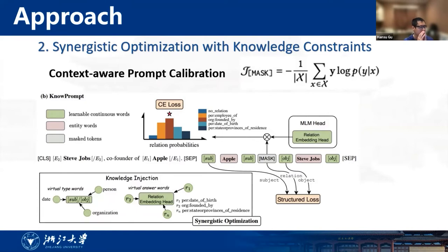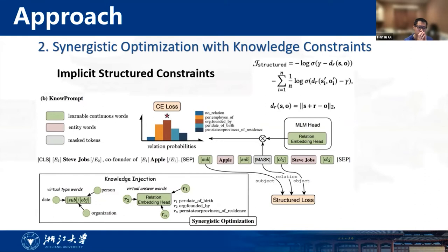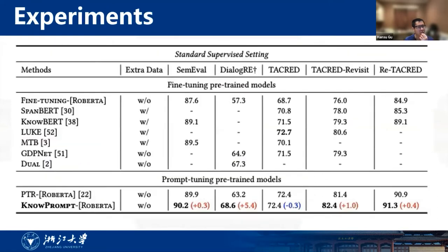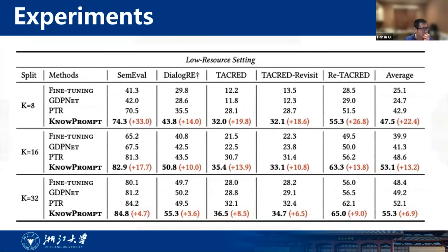To integrate structural knowledge into the prompt, we adopt additional structural constraints to optimize the prompt. We conduct extensive experiments to validate the effectiveness of our node prompt. As can be seen from the table, our approach achieved SOTA compared with several knowledge-enhanced pre-trained language models in standard supervised settings. As shown in this table, node prompt appears to be more beneficial in low-resource settings.